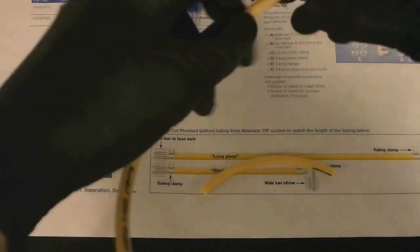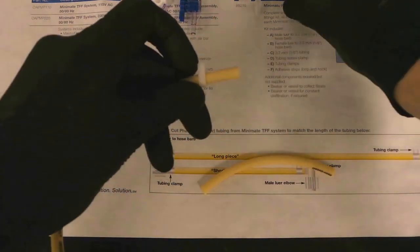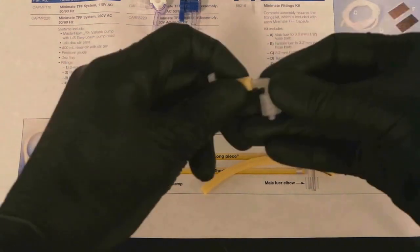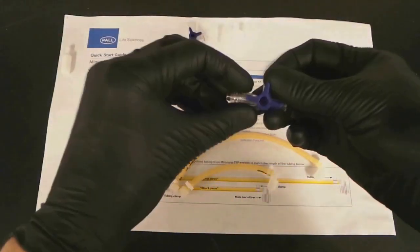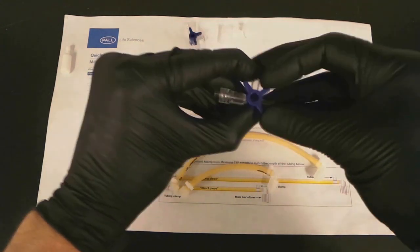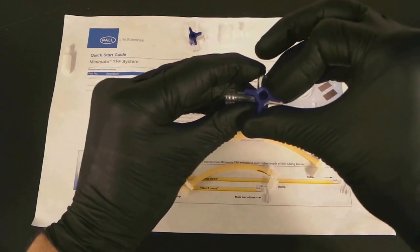Secure the lure connectors with the tubing clamp. Three-way adapter valves will be used initially on the reservoir and then with the LV CentralMate holder, so get used to how the valve on top works to direct the flow properly.